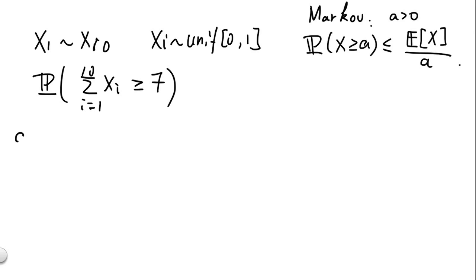In part a, we'll be using Markov's inequality written here. That is, if we have a positive random variable x, the probability x is greater than a, where a is some positive number, is bounded above by the expected value of x divided by a.